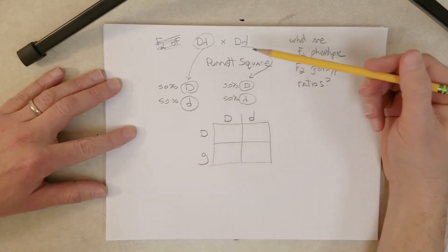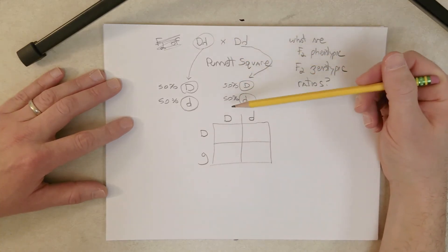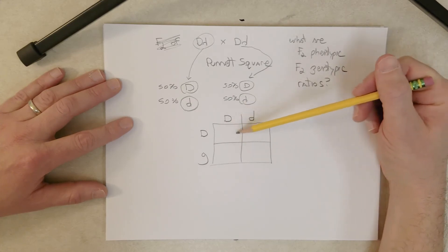And you put the gamete genotypes of the other parent at the beginning of the rows. So in a simple cross like this involving only one character, two alleles in each parent, we end up with a four-celled Punnett square.